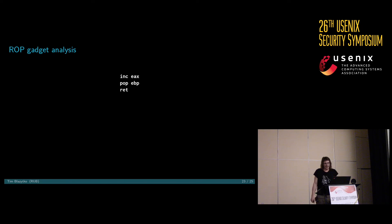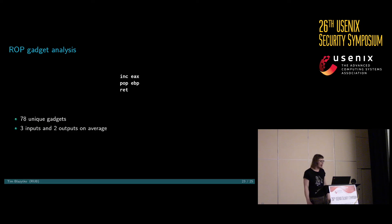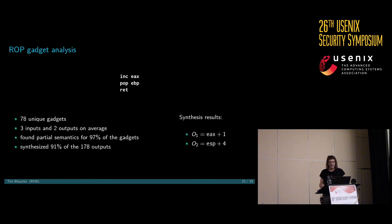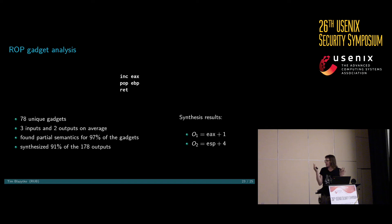Finally, some simple ROP gadgets. We had 78 unique gadgets, on average with three inputs and two outputs. We found partial semantics for 90% of all gadgets — we had 170 outputs and were able to synthesize 91 of them in the first synthesis run. For one gadget, we get something as EAX plus 1 for the INC EAX, and ESP plus 4 for the return value. We also get non-obvious things — for the RET instruction, it isn't obvious in the code itself that we increment the stack pointer.